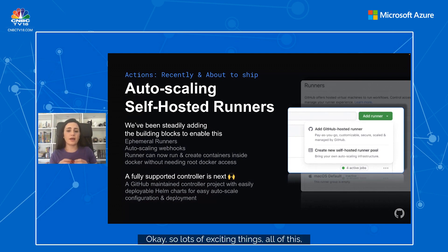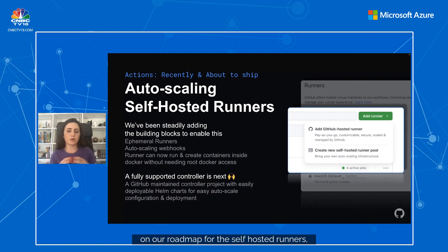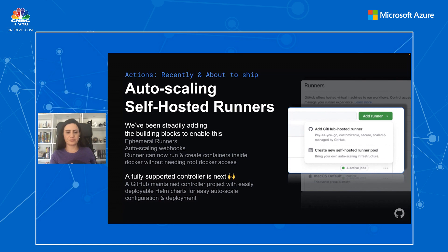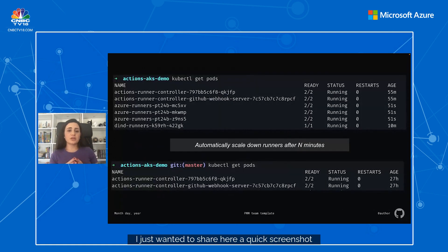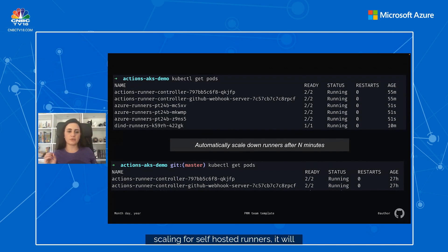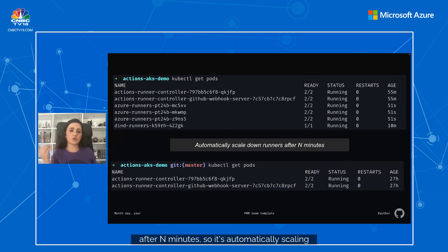Lots of exciting things — all of this is leading up to the next big milestone on our roadmap for self-hosted runners, which is a fully supported autoscaling controller. Here's a quick screenshot showing how, with autoscaling for self-hosted runners, it will automatically scale down runners after 10 minutes — automatically scaling up and down as needed.